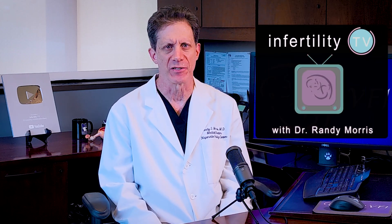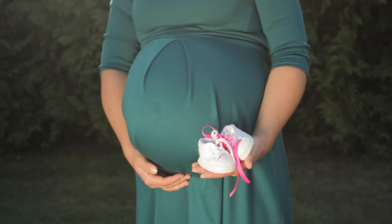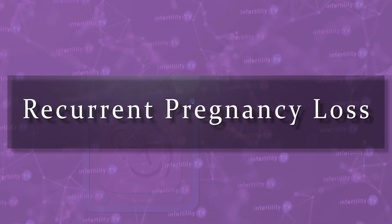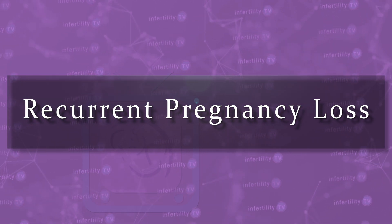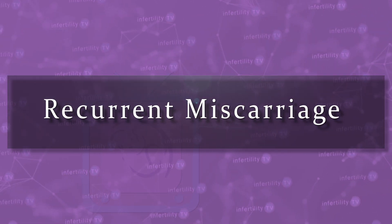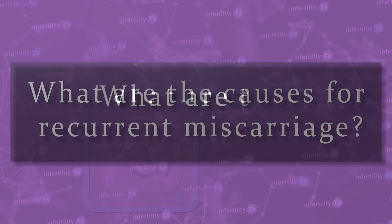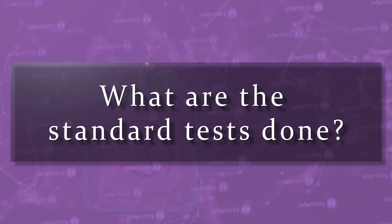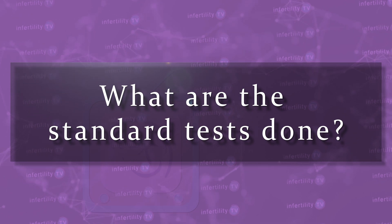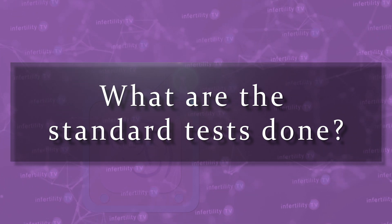Miscarriage is the most common adverse outcome of a pregnancy. A miscarriage can occur in any pregnancy and in multiple pregnancies. Doctors call this recurrent pregnancy loss or recurrent miscarriage. What are the causes for recurrent miscarriage? What are the standard tests done for couples with recurrent miscarriage?